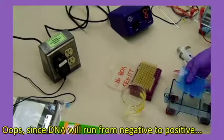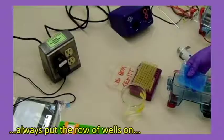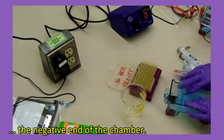Oops! Since DNA will run from negative to positive, always put the row of wells on the negative end of the chamber.